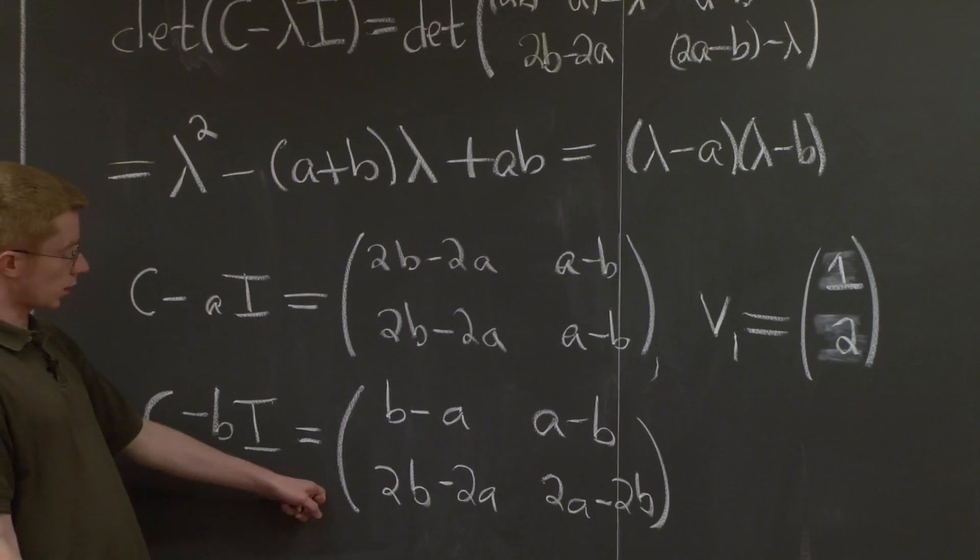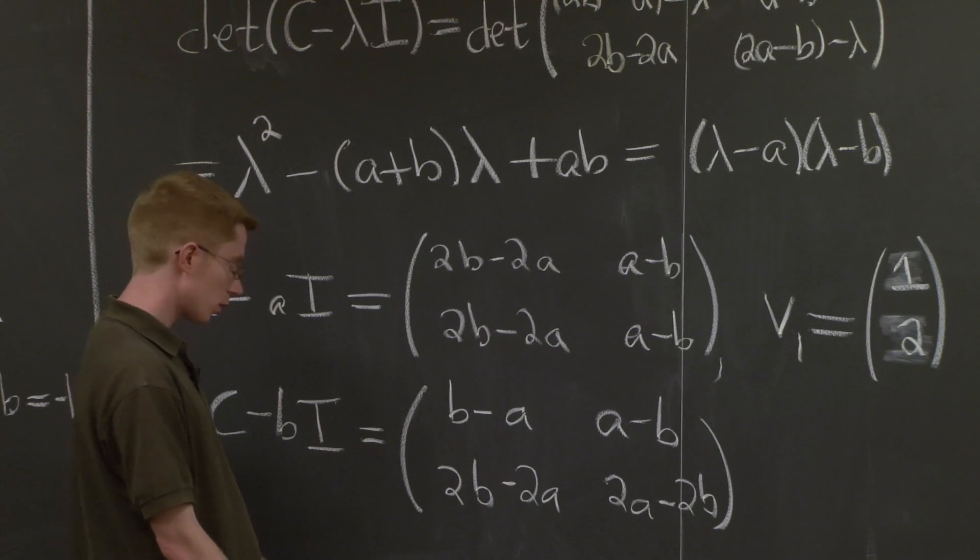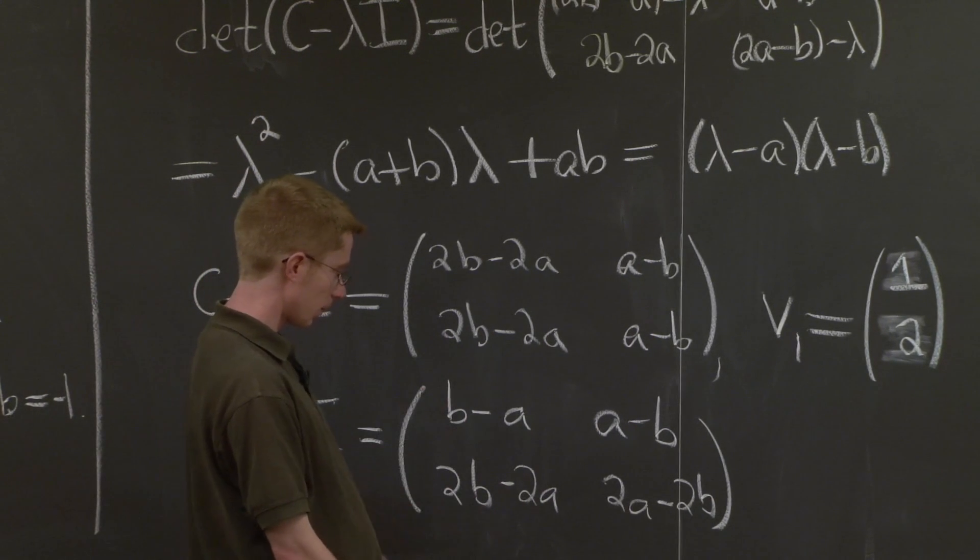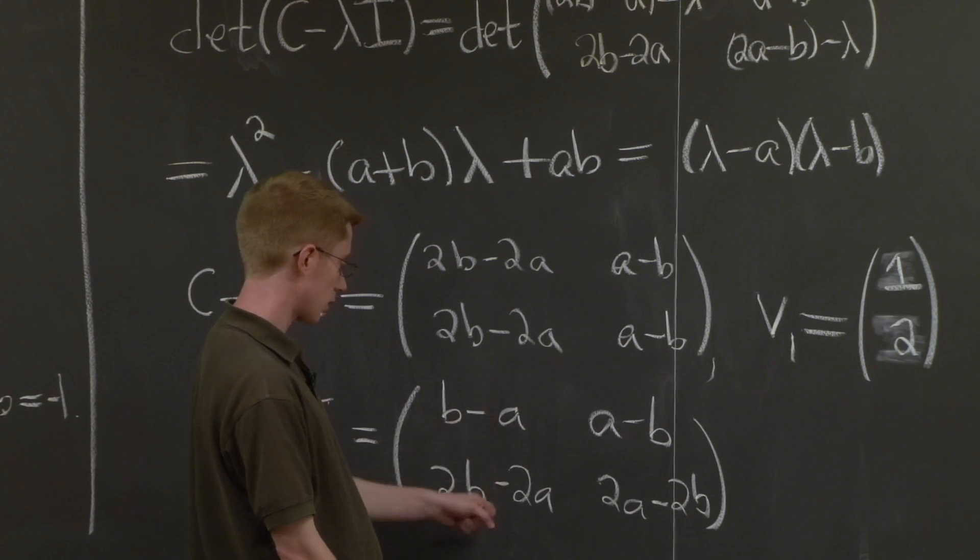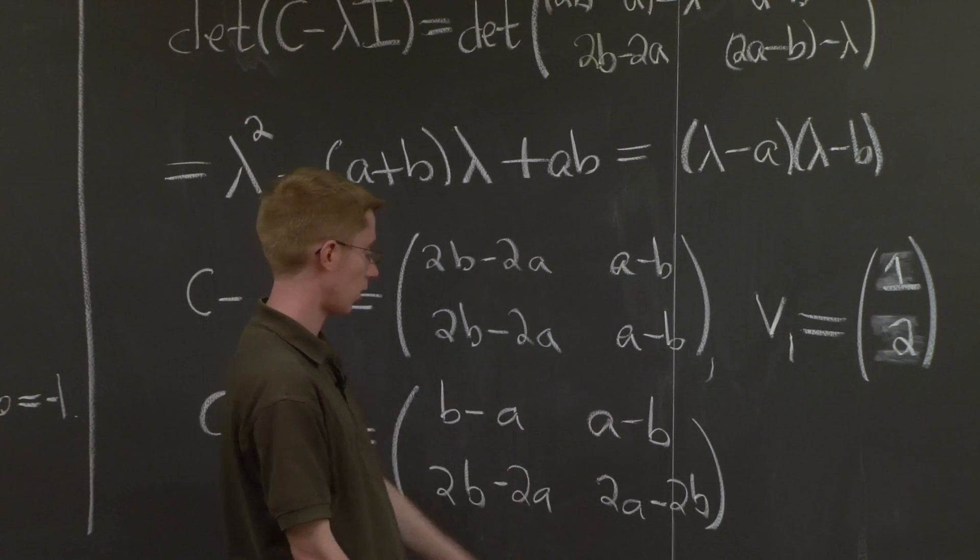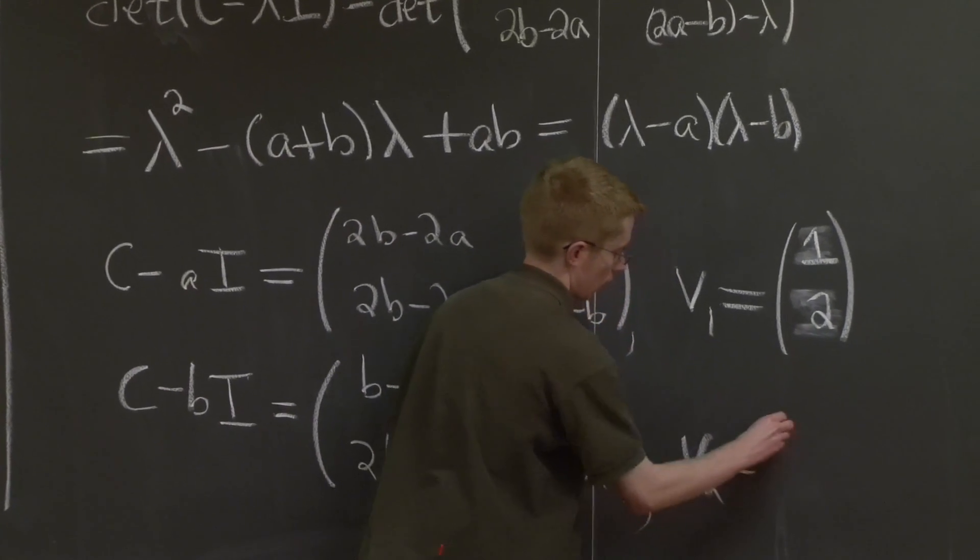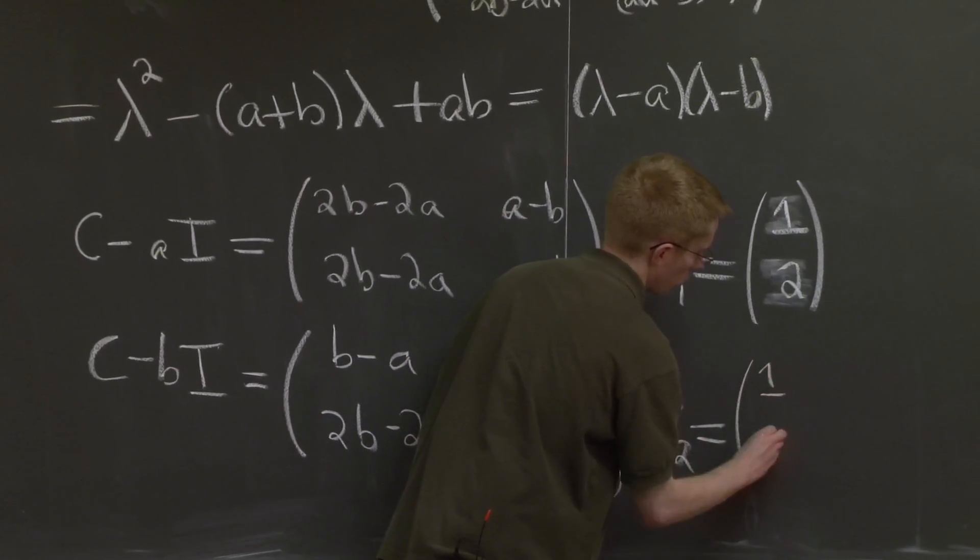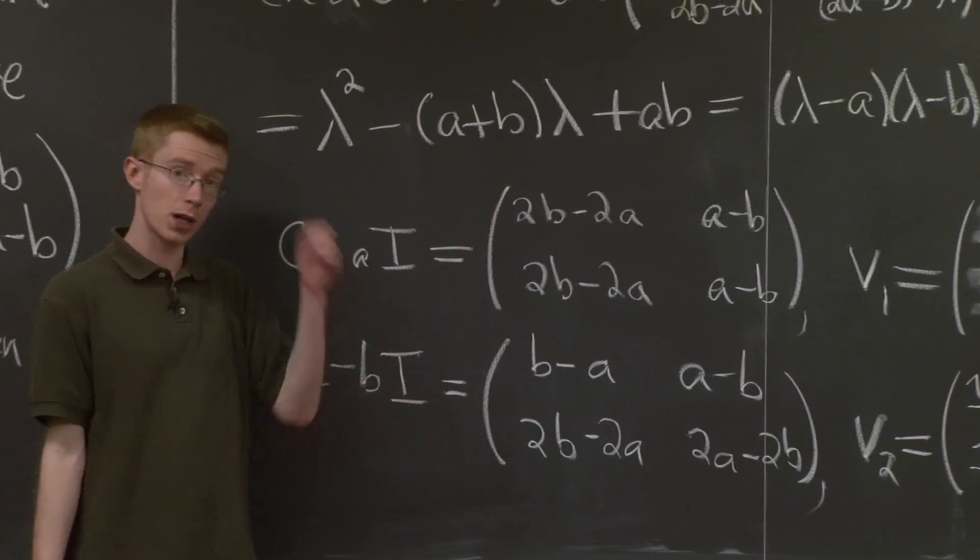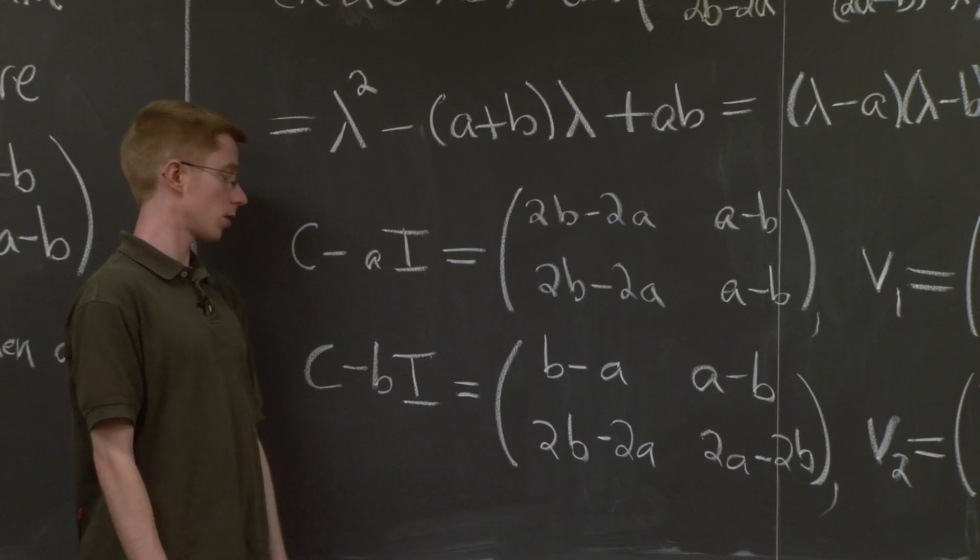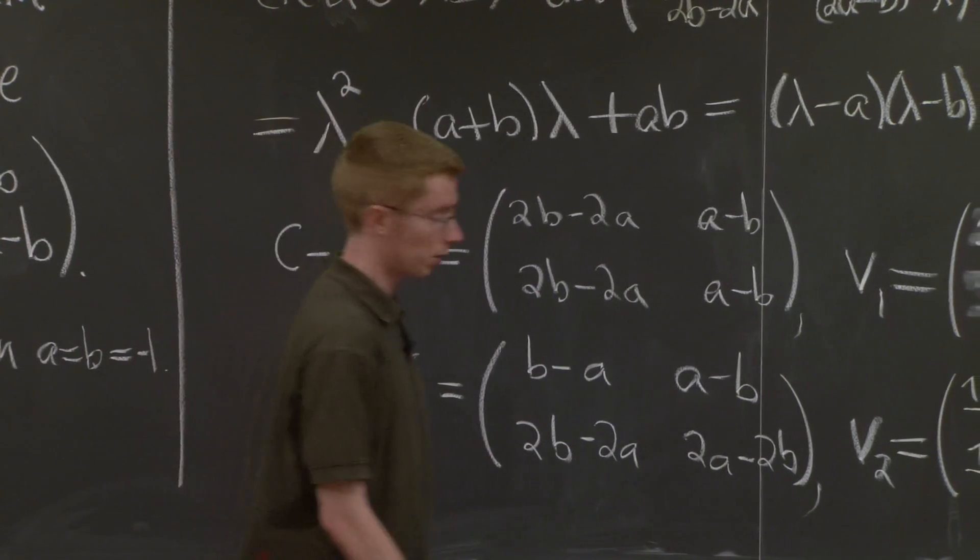So now what's in the null space of this matrix? Well, what you can see is that this column is negative 1 times that column. So our second eigenvector is just going to be (1, 1). And I should remind you that if you have a harder example, you can just find these null spaces by elimination, like we always do.